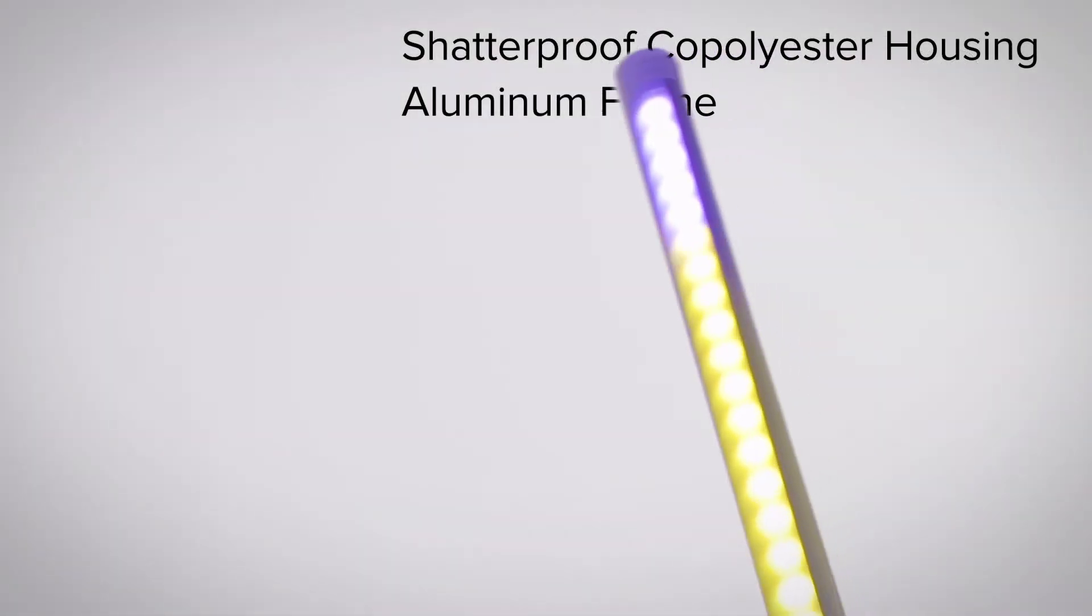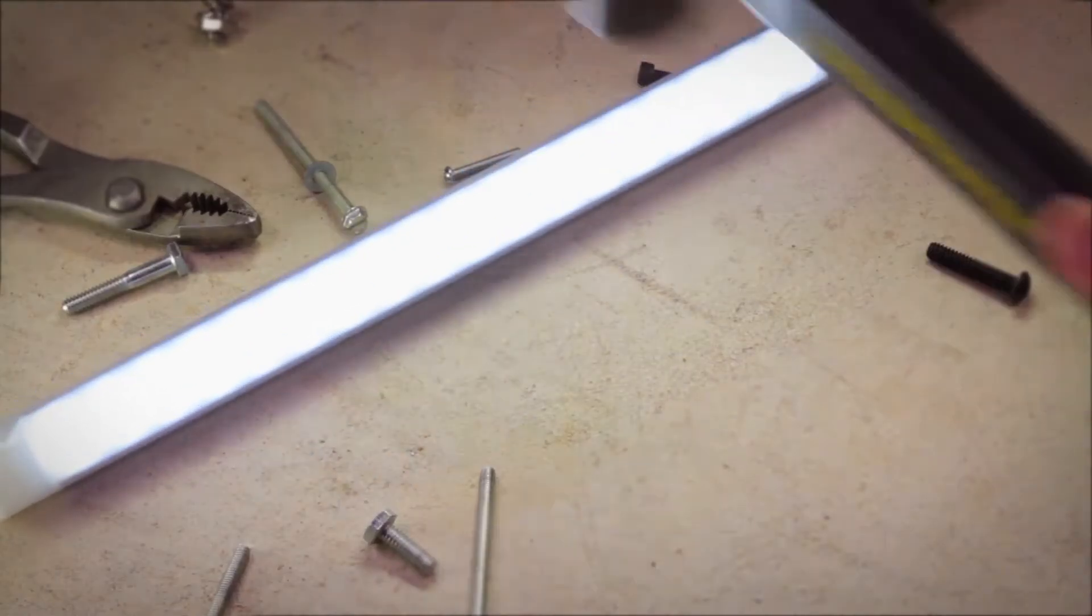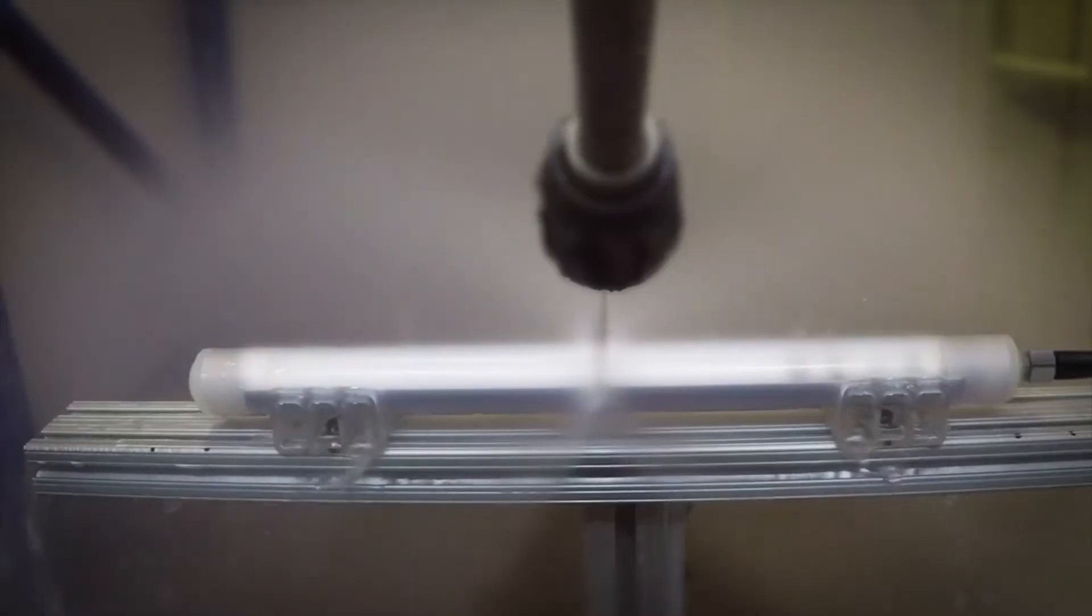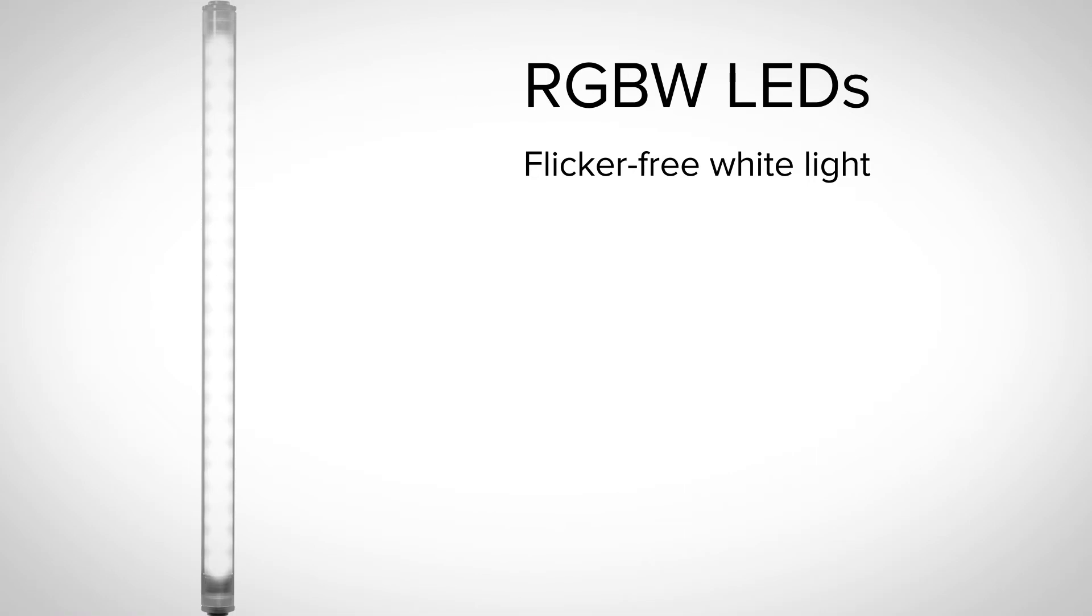The WLS-27 Pro's shatterproof co-polyester housing contains a strong aluminum frame, so it can handle the harshest environments for years of reliable service. The bright RGBW LEDs give quality, flicker-free white light for great illumination during normal operations.